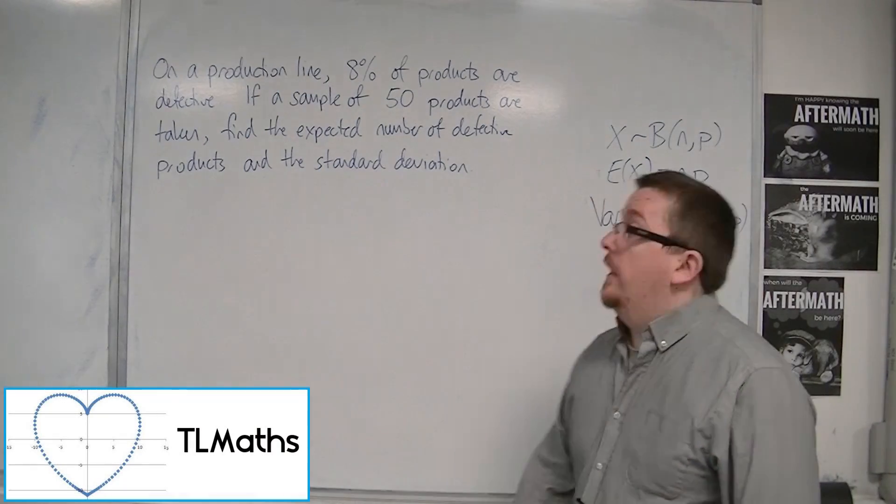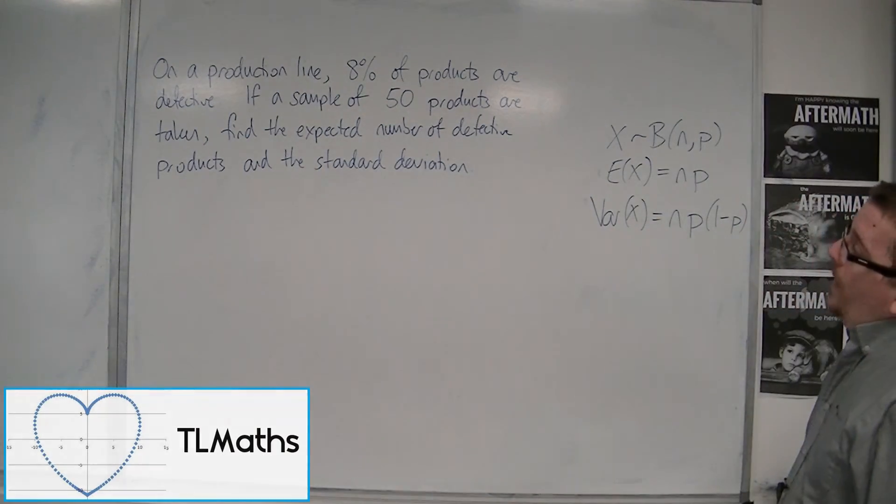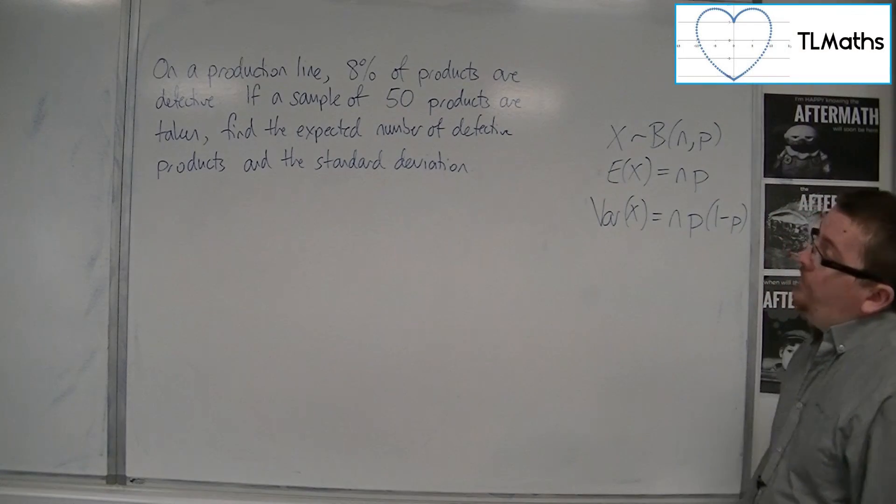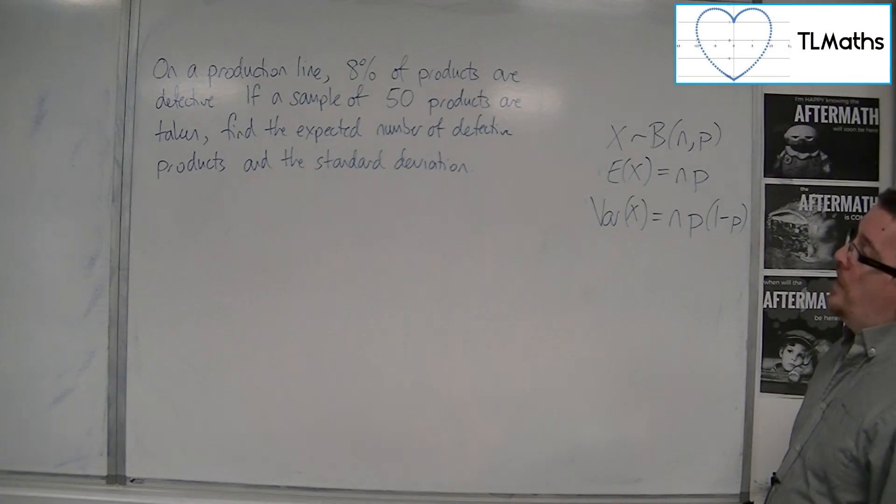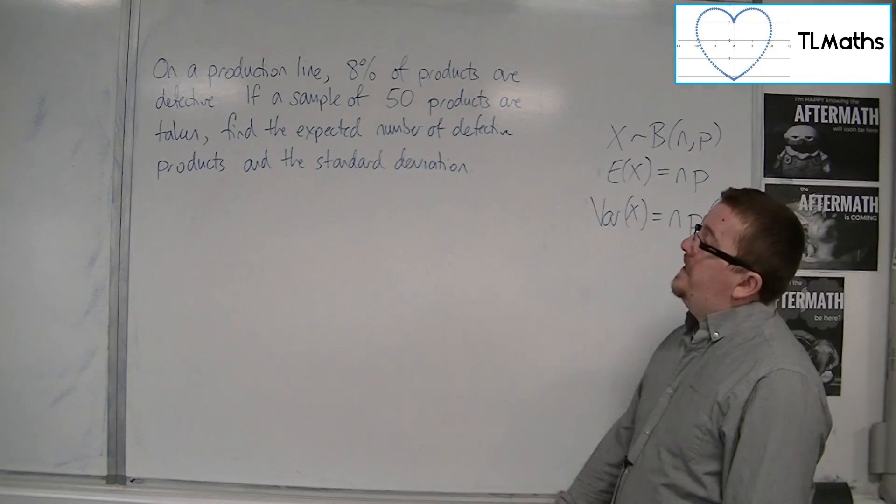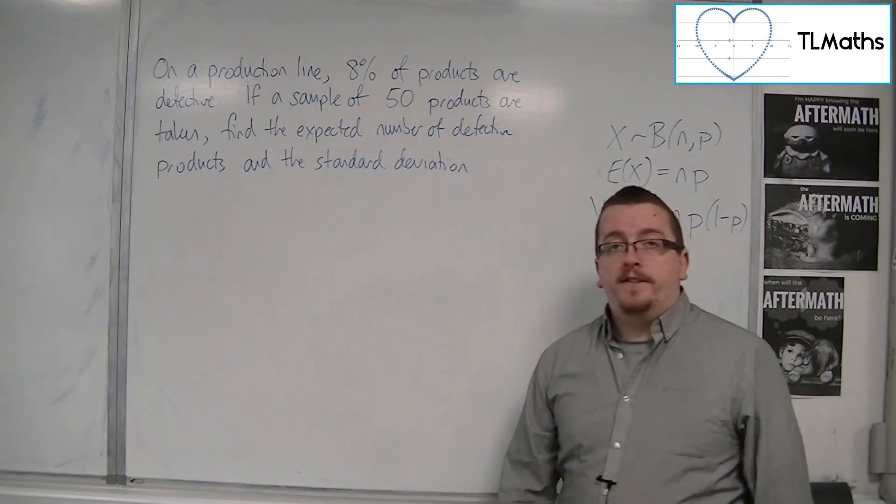So let's look at an example of this. On a production line, 8% of products are defective. If a sample of 50 products are taken, find the expected number of defective products and the standard deviation.